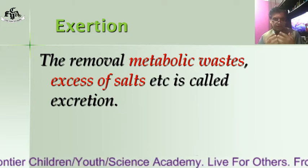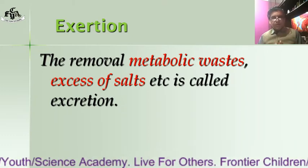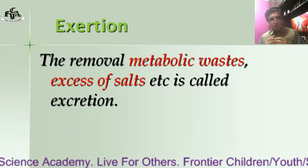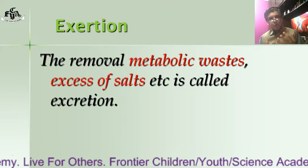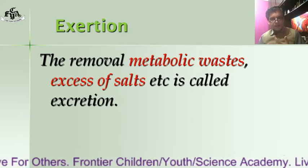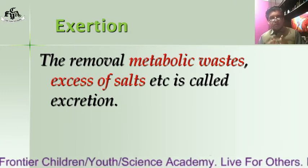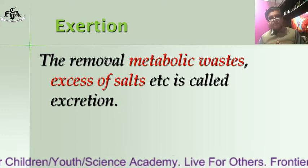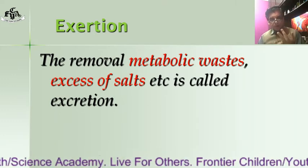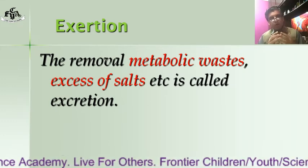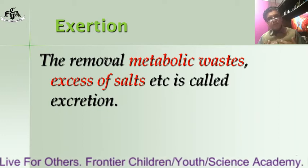A lot of reactions take place in our body; these reactions are called metabolic reactions. During these metabolic reactions, a lot of waste is produced, and these are called metabolic waste — like urea, uric acid, carbon dioxide, excess heat, and excess salts. These metabolic wastes come from the metabolism of proteins, carbohydrates, or fats.